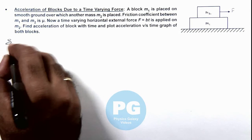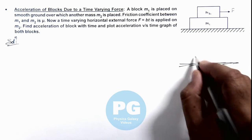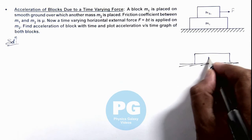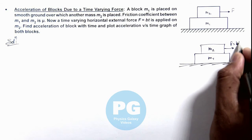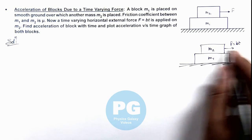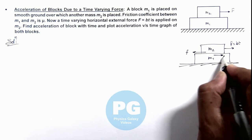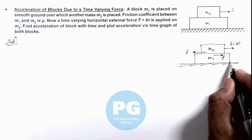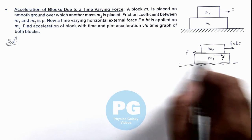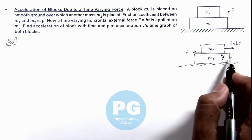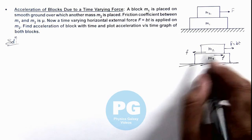Analyzing the situation: block m1 is on the ground, m2 is placed on top of it, and a time-varying force bt is applied on m2. Due to this force, friction will act on m2 in the backward direction and on m1 in the forward direction. Since the ground is smooth, this friction will be the sliding force for m1. Initially, when the value of F is small, both blocks will move together, as discussed in concept videos for stacked two-block problems.